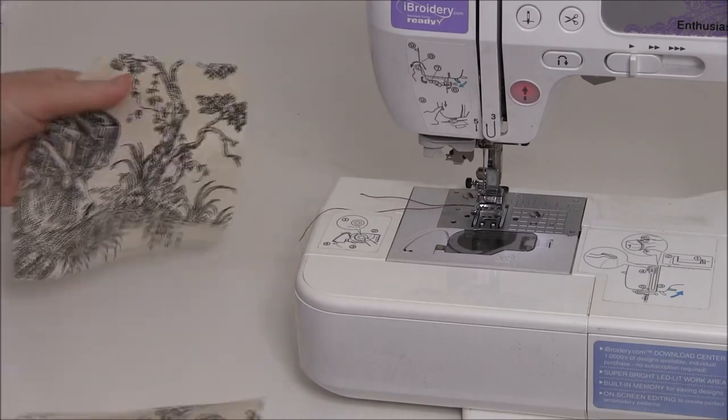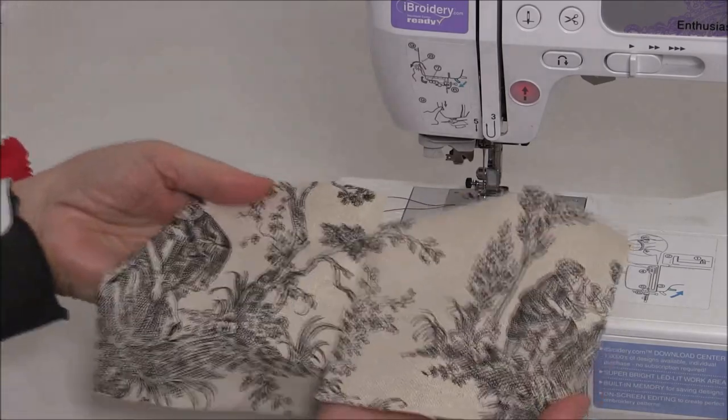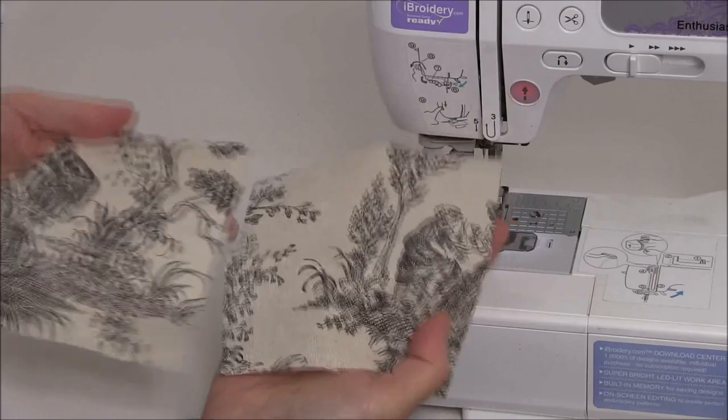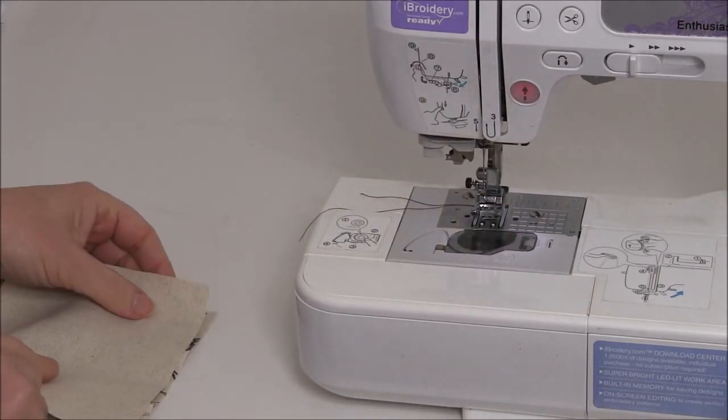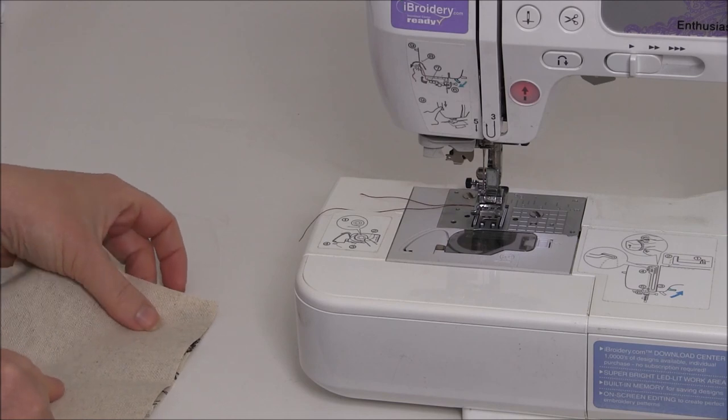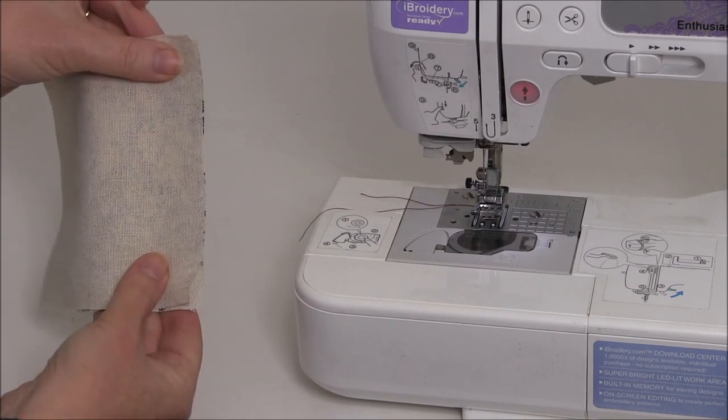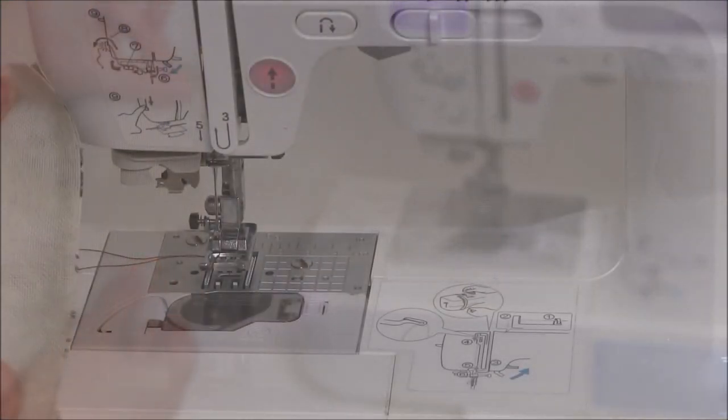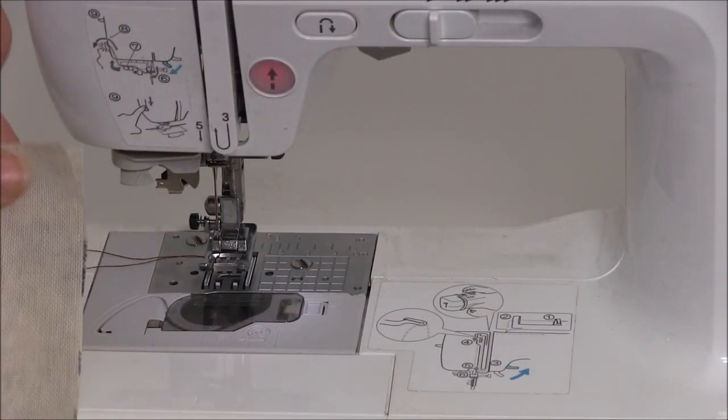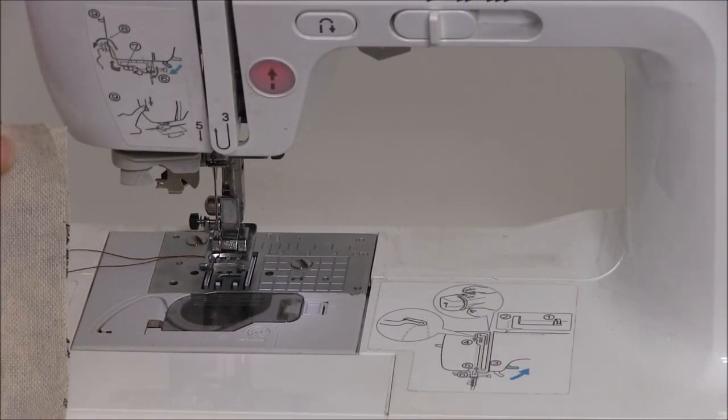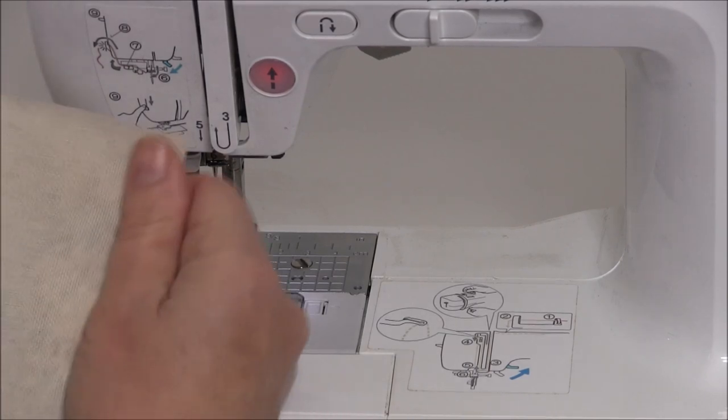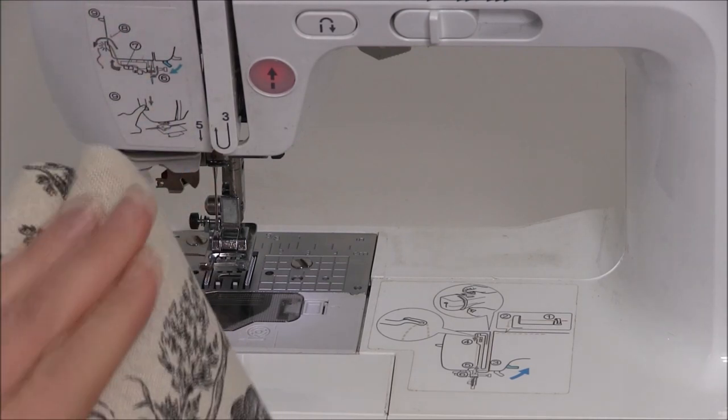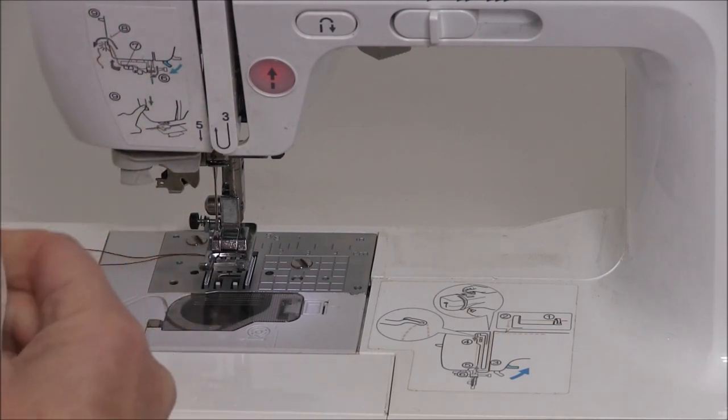To sew fabric together, what we do is we place it right sides together, like so. The reason we sew right sides together is because when we're finished we want all the stitching to be on the inside. This will be our good side on the inside, so place your fabric right sides together.